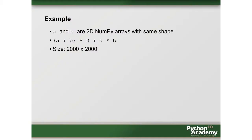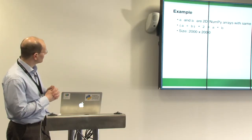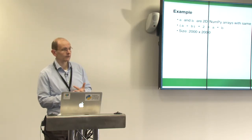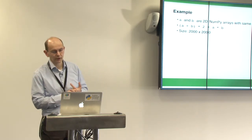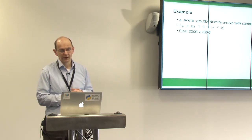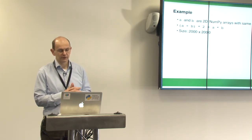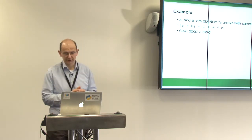Let's look at an example. I chose one example and try two different approaches — I didn't try all approaches, but just to see what Cython is doing. I have A and B as 2D NumPy arrays of the same shape. I do some calculations: A plus B times 2 plus A times B. The size of this array is 2,000 by 2,000, so I have about 4 million elements. I try a few different approaches to parallelize things and see what Cython can do with it.